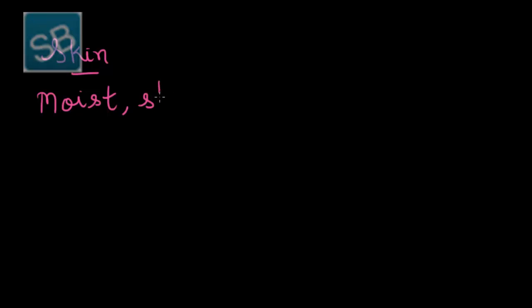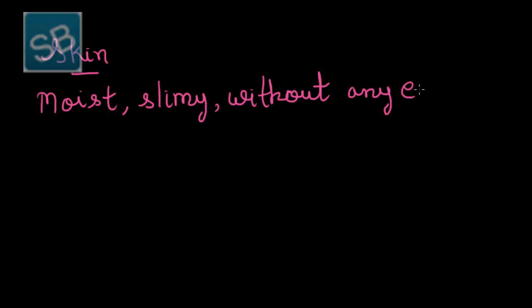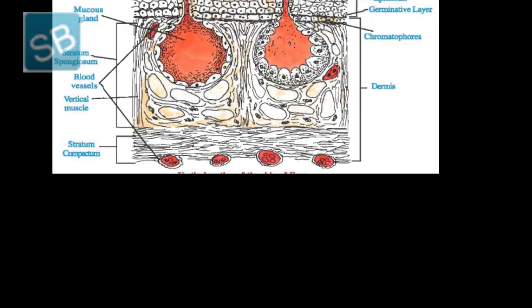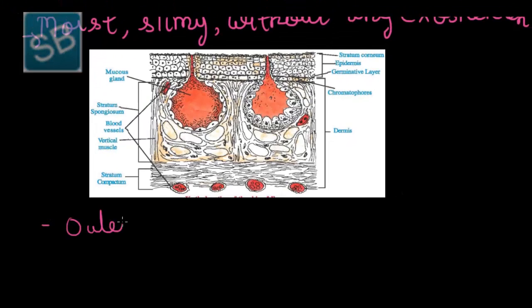Now we will understand about the skin of the frog. The frog skin is moist, slimy, and without any exoskeleton. The moist nature of skin is due to the presence of mucus. This figure represents the vertical section of the skin of a frog. The frog skin basically consists of two layers: outer epidermis and inner dermis.